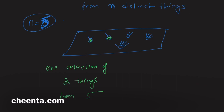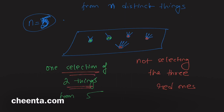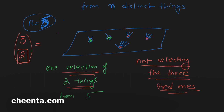Notice that instead of saying you are selecting the two green ones, you could have said you are not selecting the three red ones. Selecting the two green things is the same as not selecting the three red things. So you are indirectly indicating the red things when you select the two green things. Five choose two — choosing two things out of five — is the same as not choosing the remaining three things.